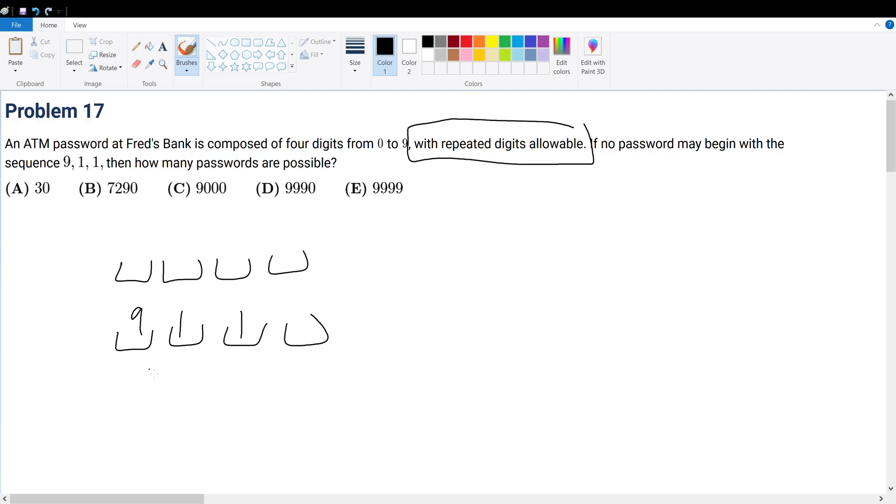So in this case, if we want to do complementary counting, we have to find a total number of cases subtracted by the ones that we don't want. So this is what we want, that we don't want, to get the ones that we want. So that's the logic of it.